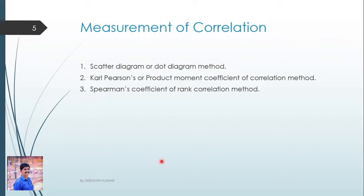Now we look at the measurement of correlation. The degree of correlation between two variables is studied using certain measurements. From the syllabus point of view, there are three methods: one is the scatter diagram or dot diagram method; second is Karl Pearson's product moment coefficient of correlation; and the third is Spearman's coefficient of rank correlation, simply called rank correlation.